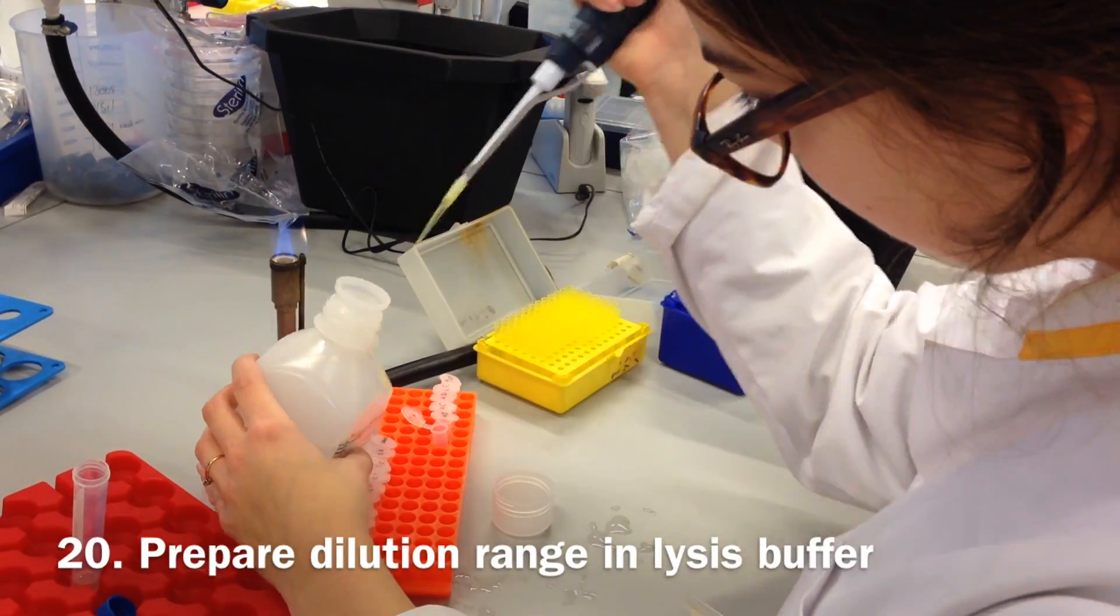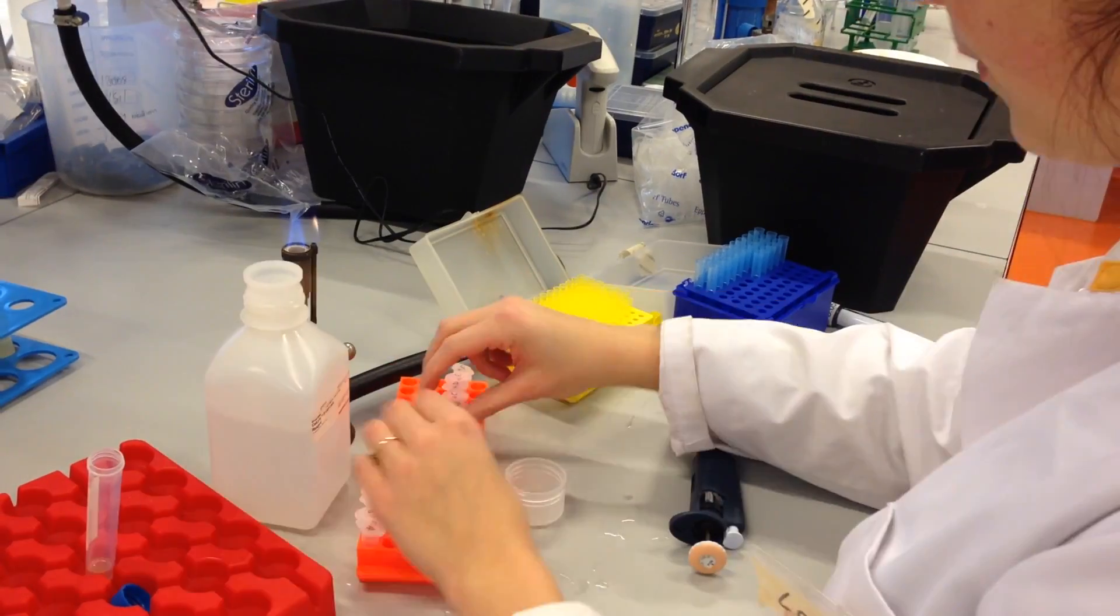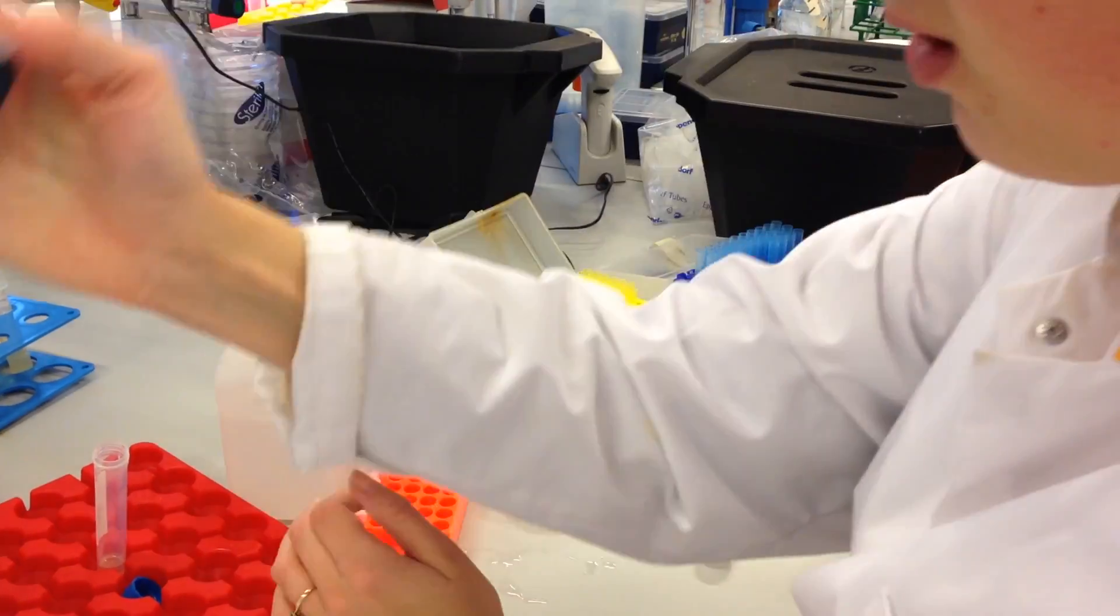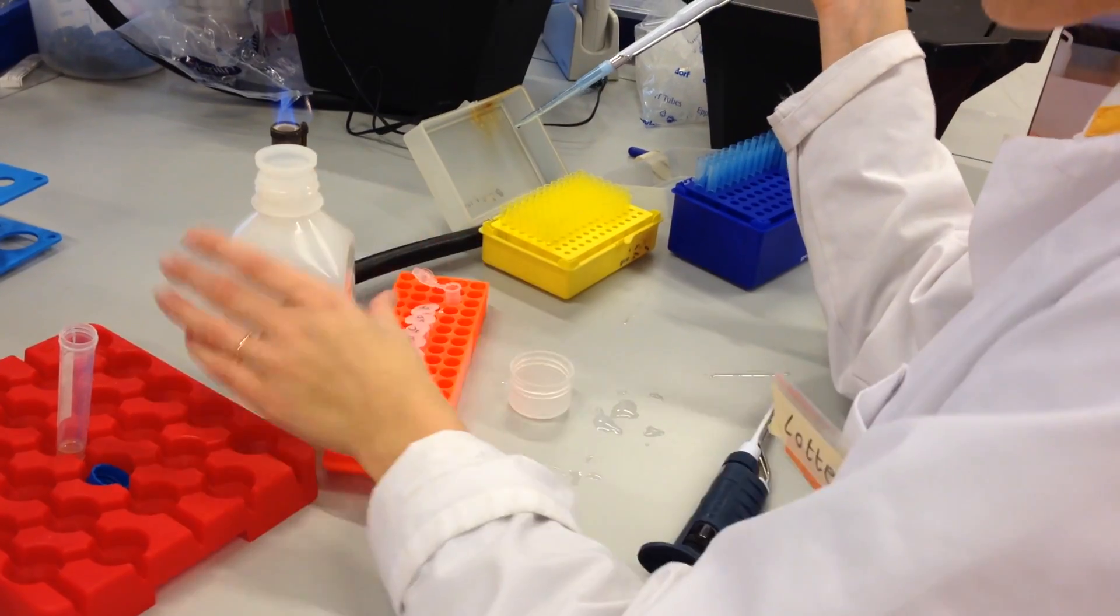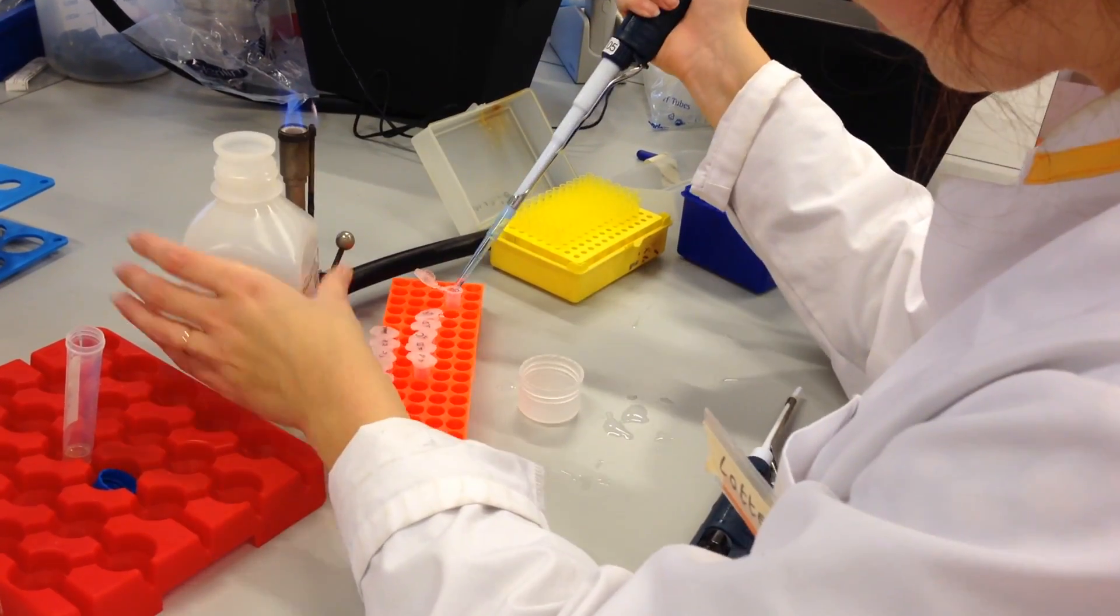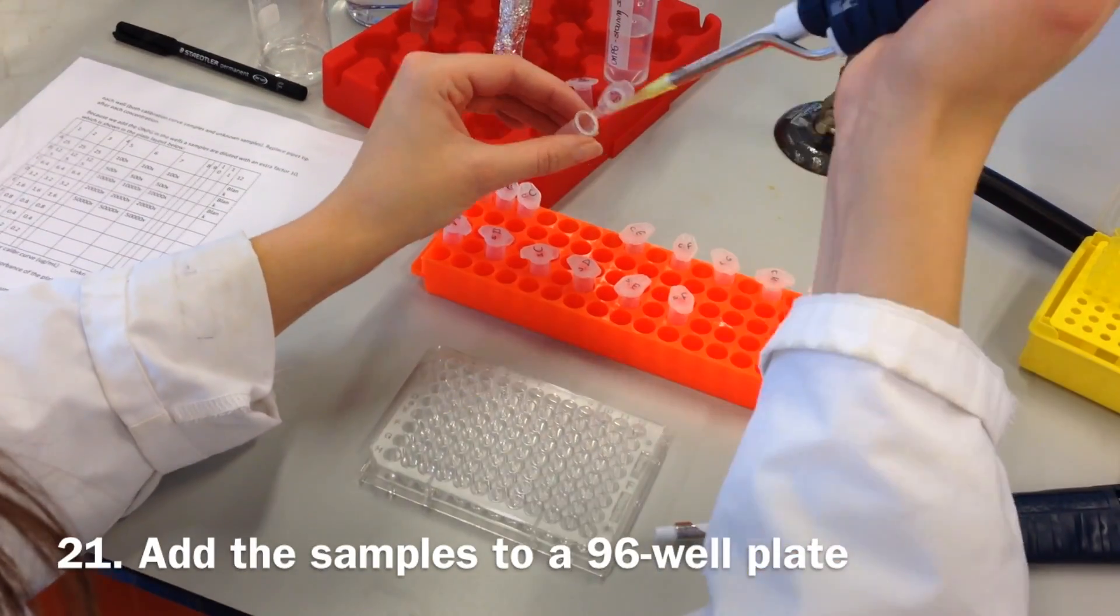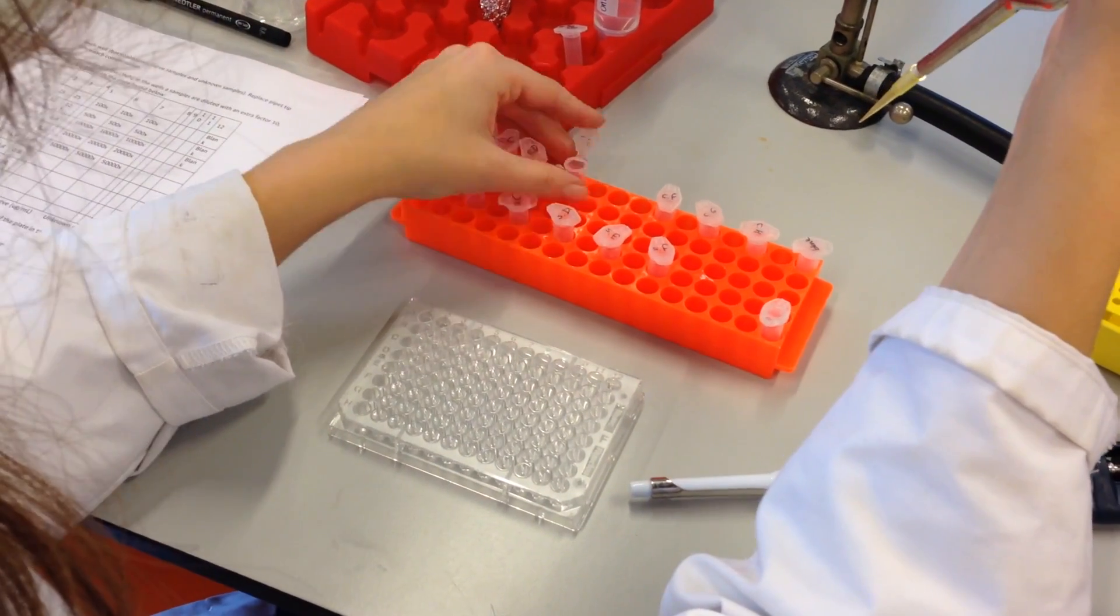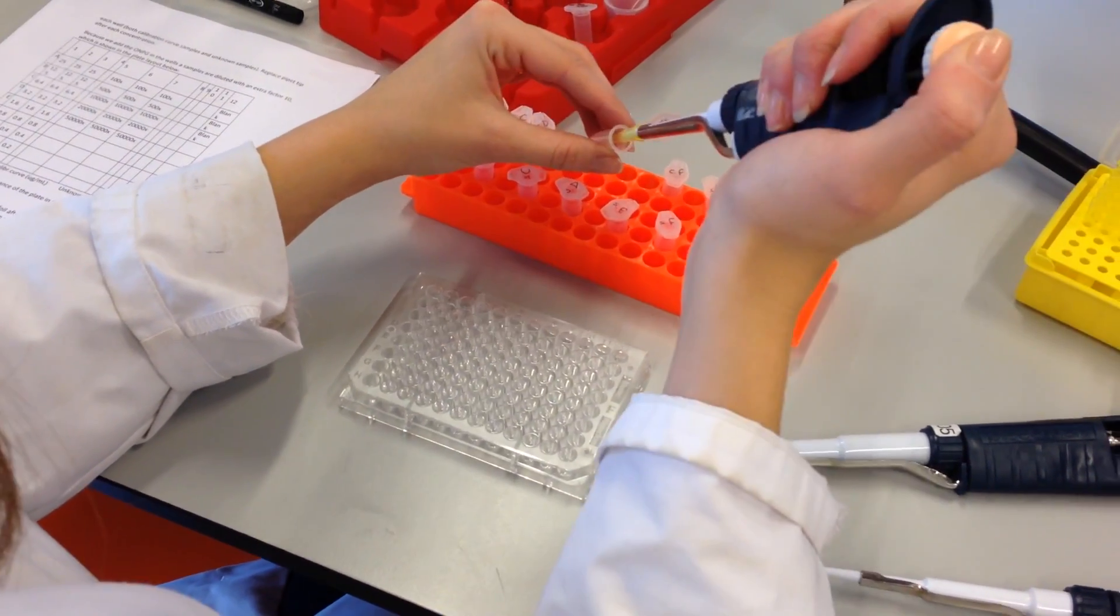After completion of cell lysis buffer incubation on ice, prepare a dilution range of this sample by diluting it in lysis buffer. Transfer the prepared calibration curve samples and dilutions of your unknown sample into a clear 96-well plate. Make triplicate for each sample.